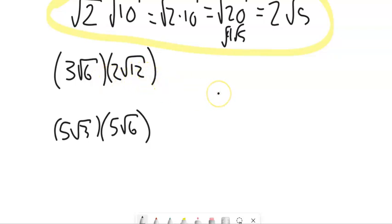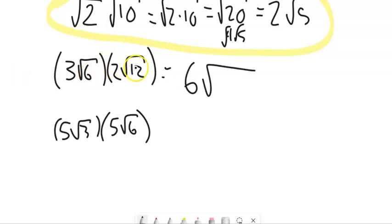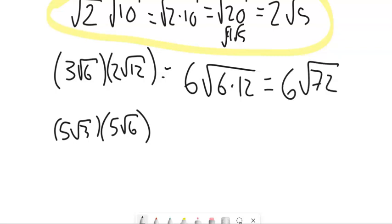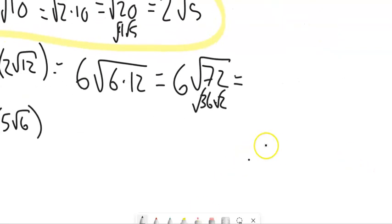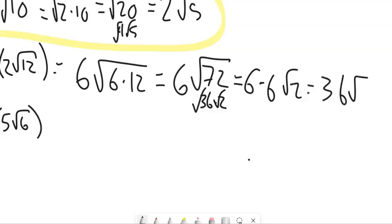3 root 6 times 2 root 12: all these are multiplied together — 3 times the square root of 6 times 2 times the square root of 12. So 3 times 2 is 6, and the square root of 6 times 12 gives us 6 times the square root of 72. Since 72 is 36 times 2, we have 6 times 6 times the square root of 2, which is 36 root 2.